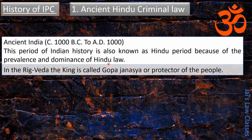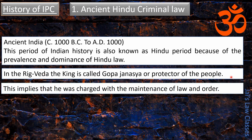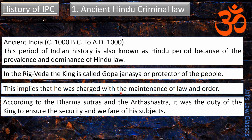The ancient India period is also known as the Hindu period because of the prevalence and dominance of Hindu law. In the Rig Veda, the king is called the Goppa Janasya, or the protector of the people, implying he was charged with the maintenance of law and order. According to the dharma sutras and the Artha Shastra, it was the duty of the king to ensure the security and welfare of his subjects.